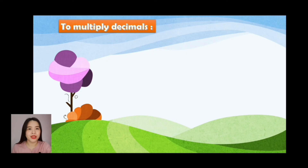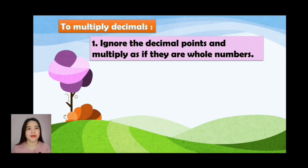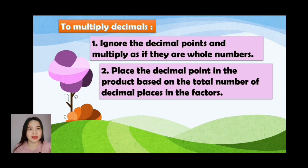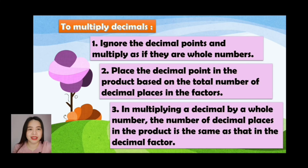Always remember: to multiply decimals, we need to ignore the decimal points and multiply the numbers as if they are whole numbers. Next, place the decimal point in the product based on the total number of decimal places in the factors. And lastly, in multiplying a decimal by a whole number, the number of decimal places in the product is the same as that in the decimal factor.